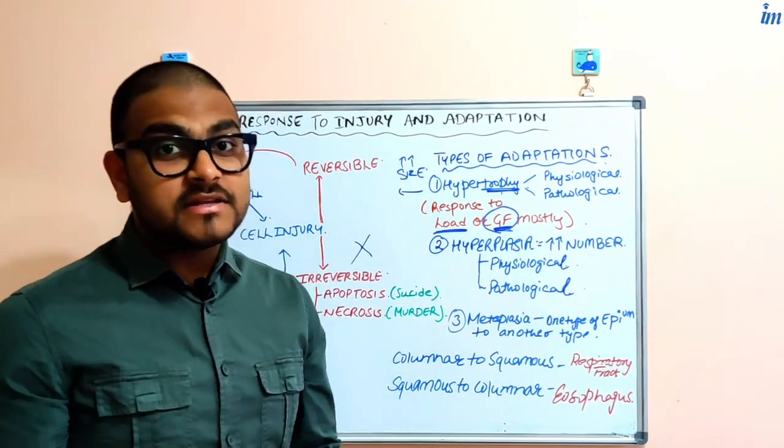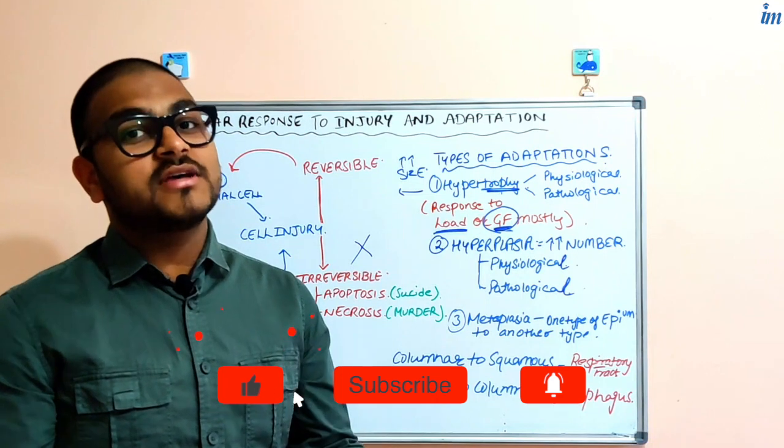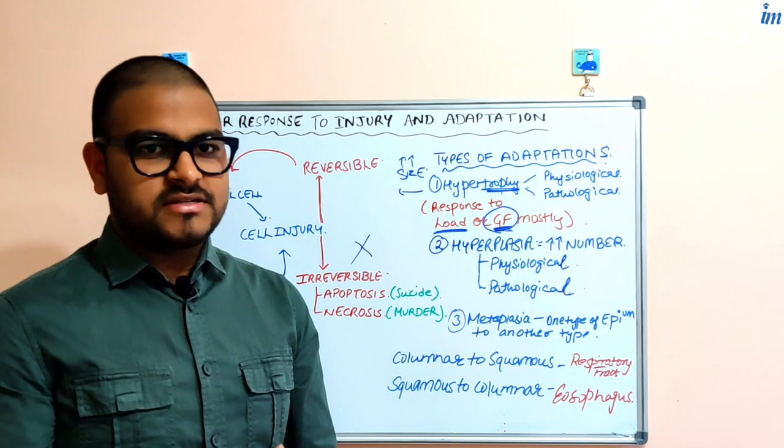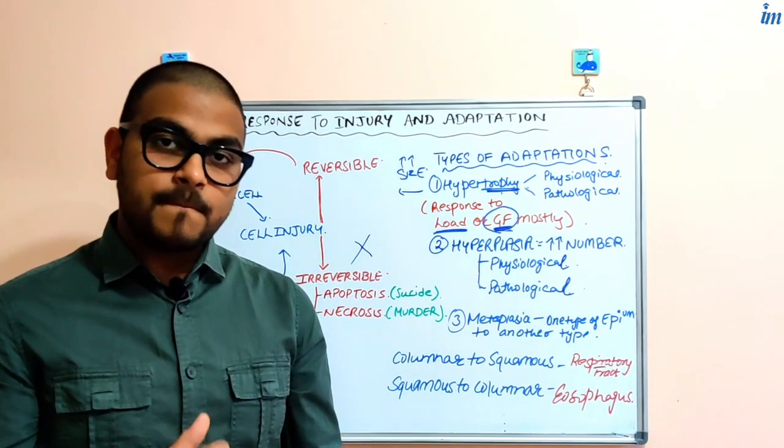Pathological hyperplasia example - give me the example. The example is what? Endometrium lining of the uterus. It undergoes hyperplasia when there is inappropriate stimulation of the uterus endometrium by excessive release of estrogen.